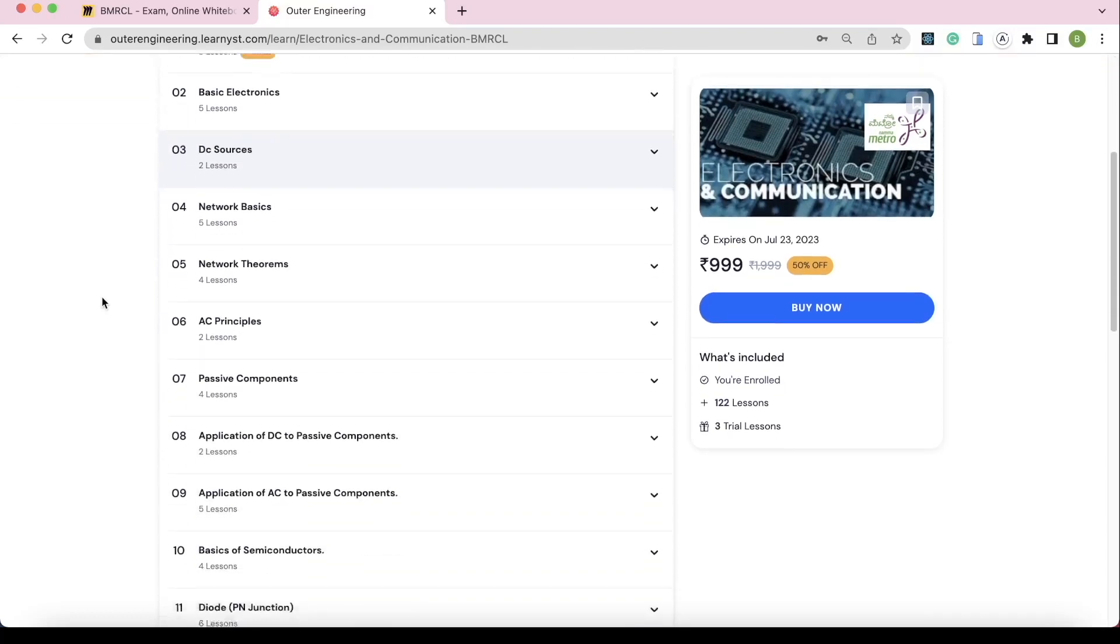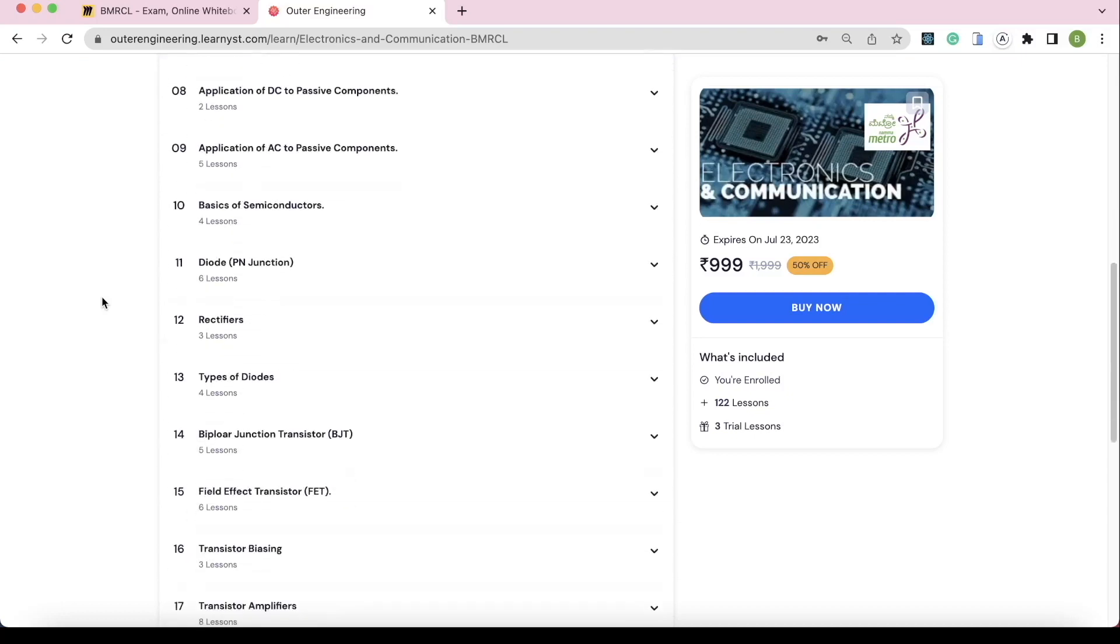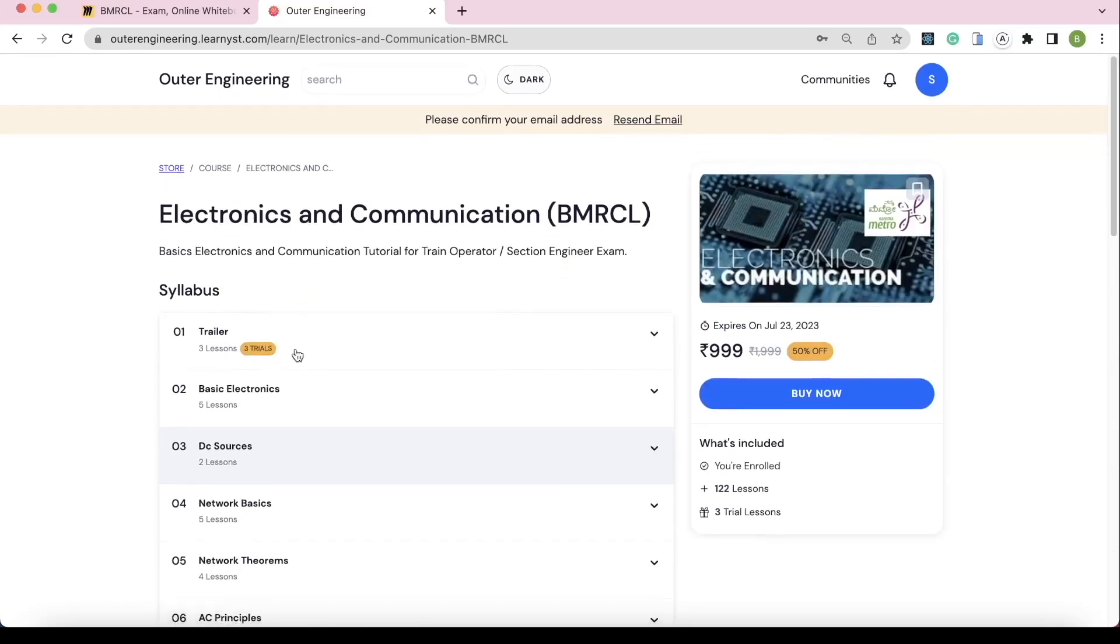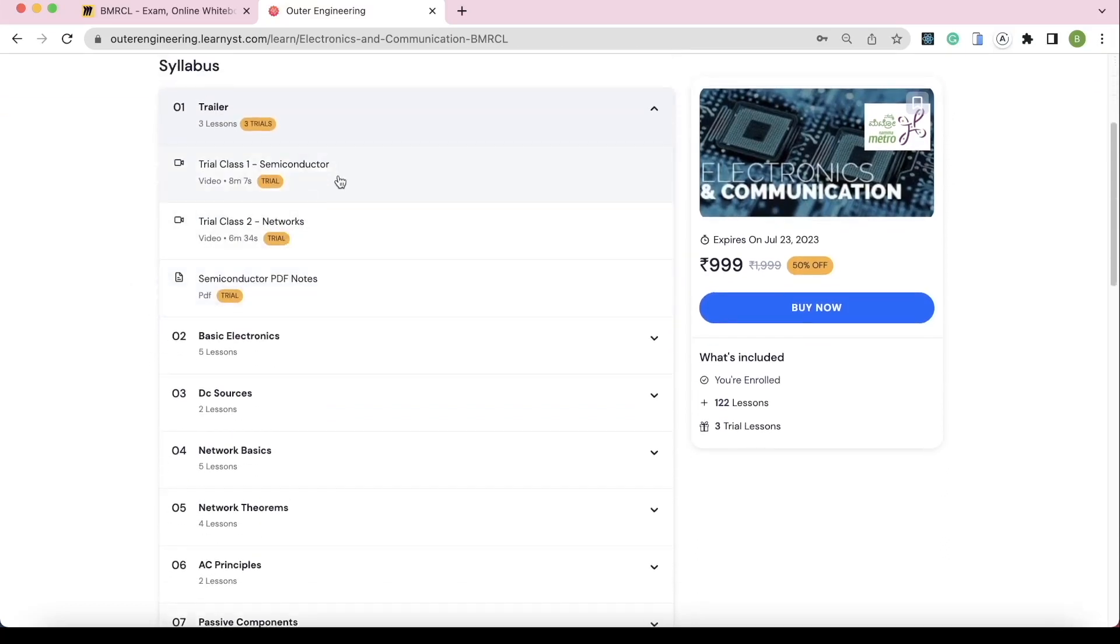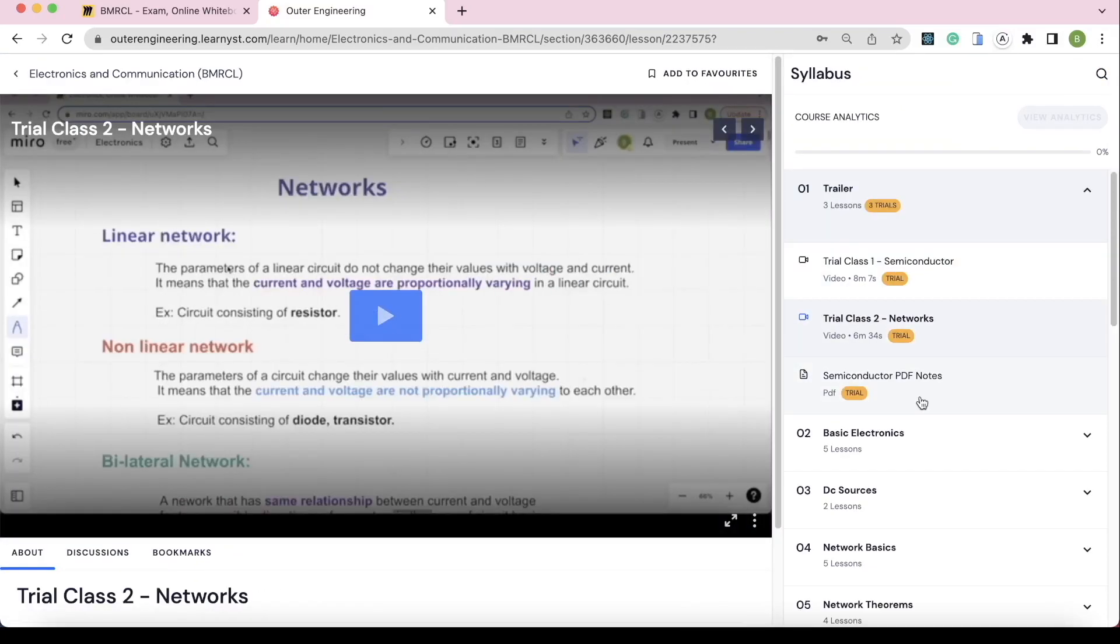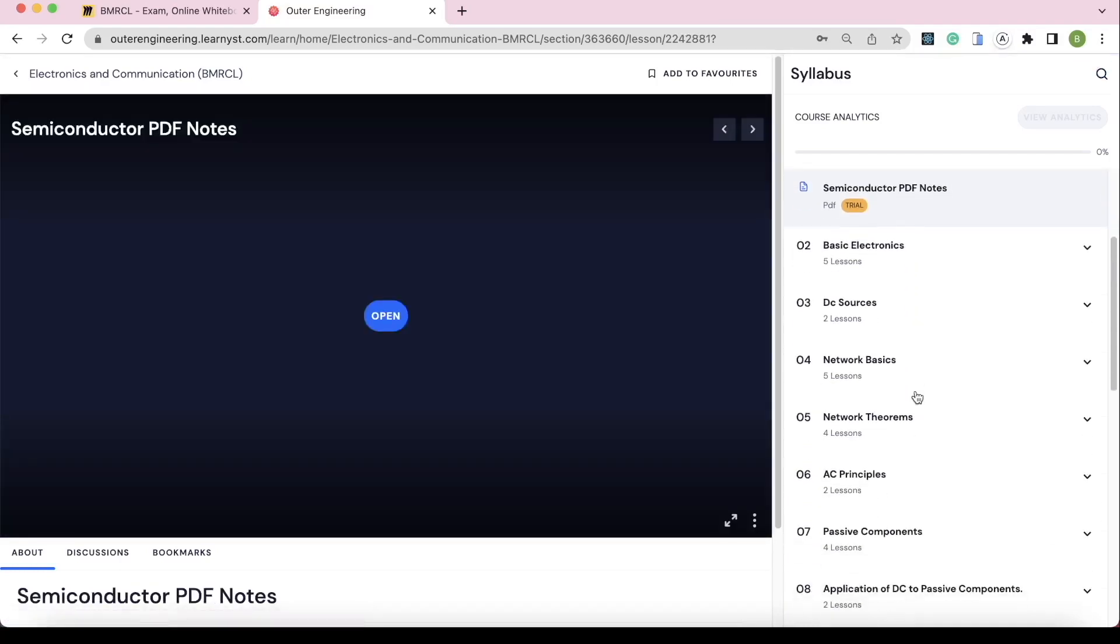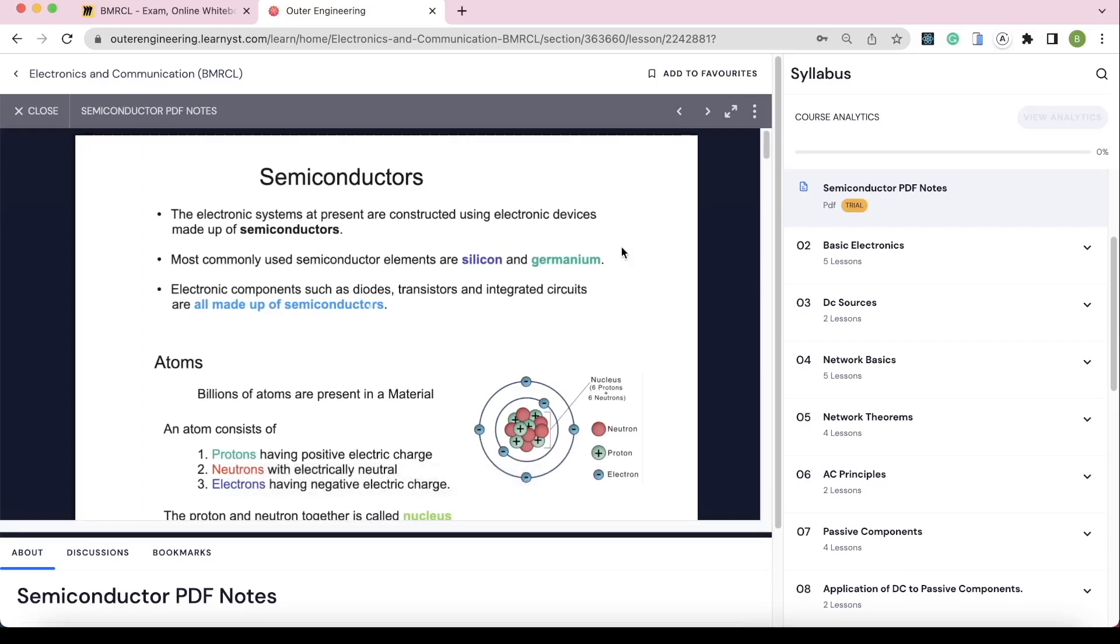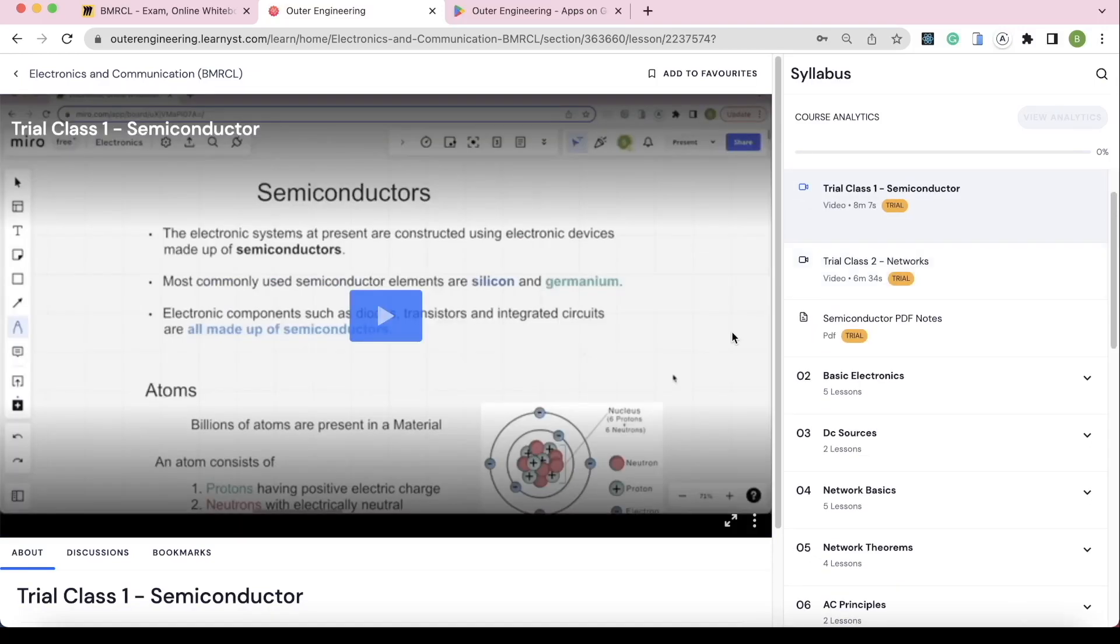The topics are basic electronics and communication: basic electronics, networks, passive components, diodes, transistors, oscillators, op-amp, digital electronics, analog communication, digital communication. The first section is trial. You can add trial classes. You can add free notes. You can play and access revision PDF notes similar to the video.